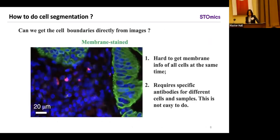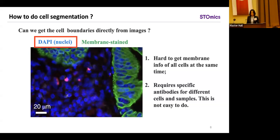Another way is direct cell membrane staining — direct is always better. But in reality it's pretty hard to get a good antibody to stain membrane for all cells, especially since the reason people start with single cell and spatial is that they have heterogeneous tissue with many different cell types. It's really hard to find a good antibody set that can stain all the membranes simultaneously at good quality. So what we have, as mentioned, is a DAPI staining of the cell nucleus, and we try to find a way to do cell segmentation accurately with this data only.